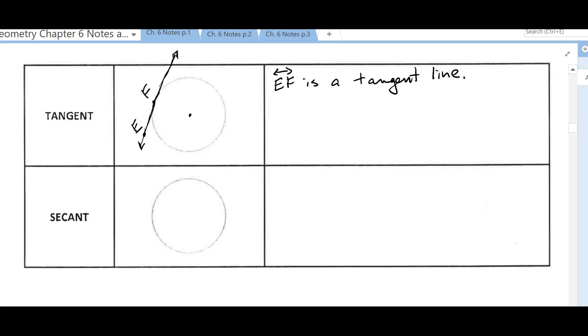Notice the difference between the last three terms we talked about is that this one is a line. A tangent is a line that intersects a circle at exactly one point.